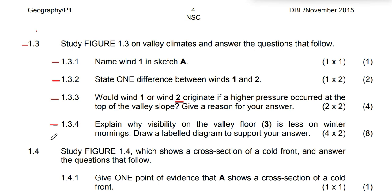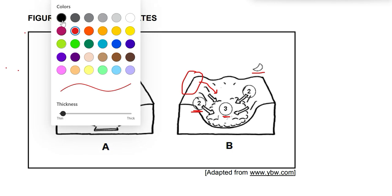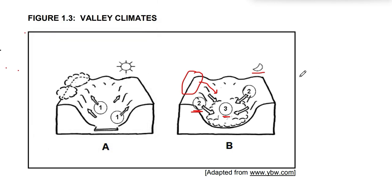Question 1.3.4: Explain why the visibility on the valley floor is less on winter mornings. Draw a base diagram to support your answer. So why does visibility reduce on the valley floor on winter mornings? We need to draw a small diagram to support our answer, illustrating how number 3 forms, explaining it using that diagram.